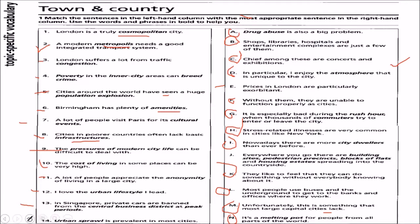Fourteen: urban sprawl is prevalent in most cities. We match it with J — everywhere you go there are building sites, pedestrian streets, and blocks of flats and housing estates spreading into the countryside.